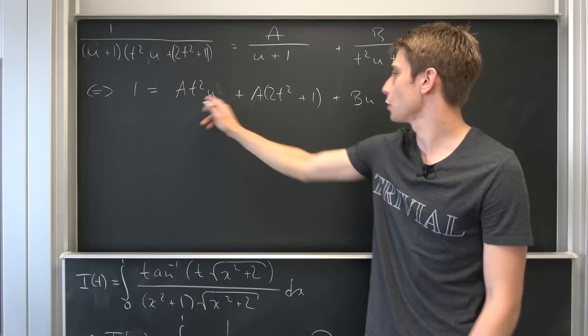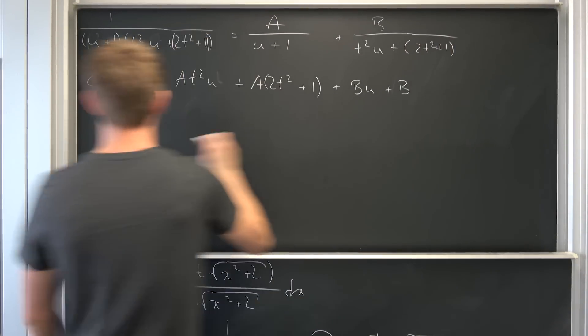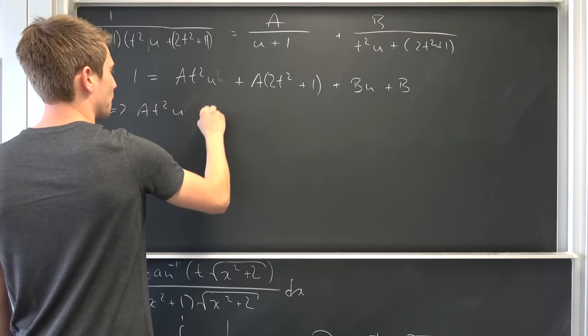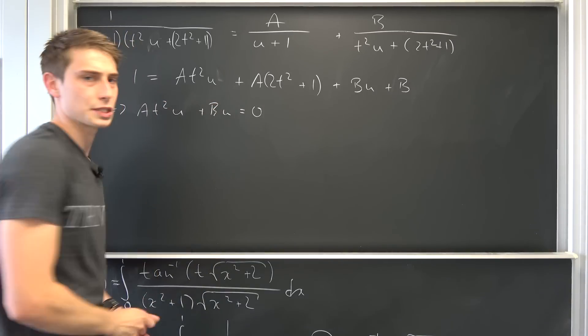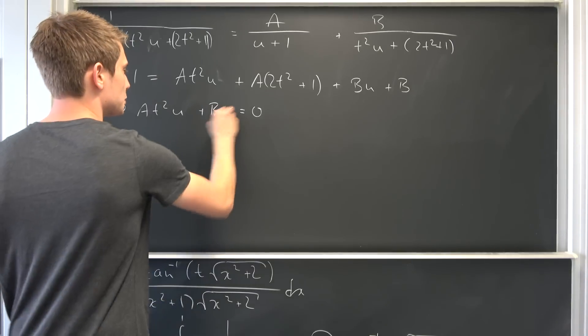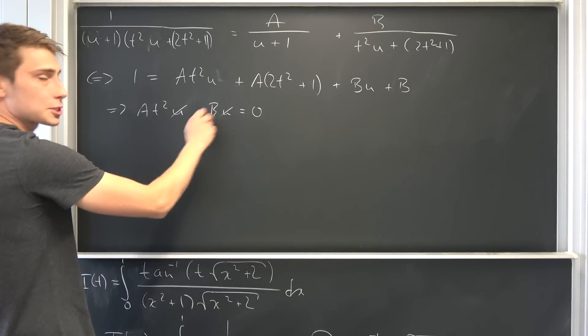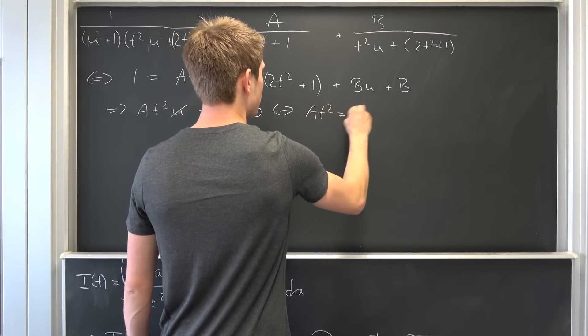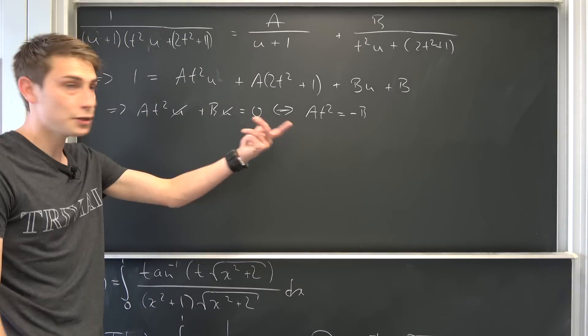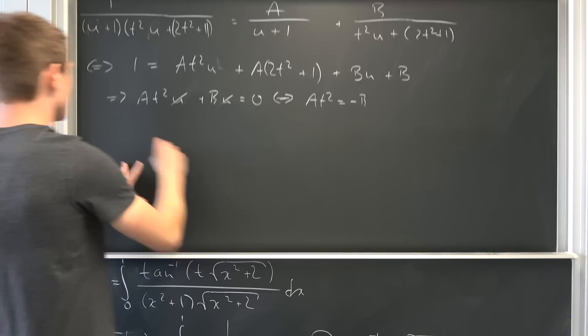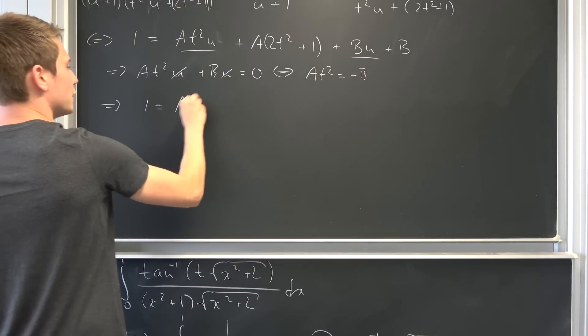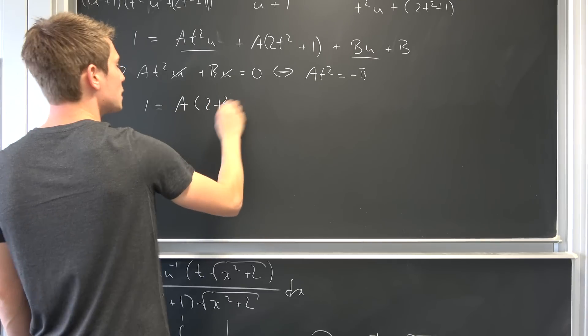You see we want to get rid of those terms right here, so we need A t squared times u plus B times u to be equal to zero. We are just going to compare coefficients. So let's get rid of this u, bring the B to the other side, and it also means that A t squared is nothing but negative B, and we have a new condition that we can plug in here actually.